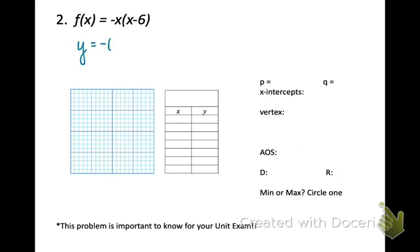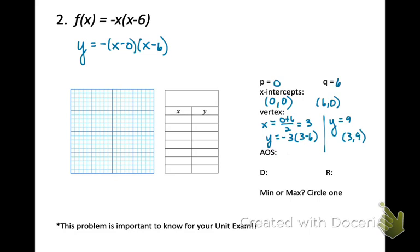All right, check your second one. Now this is one that you'll want to listen. So notice that the x was, first x was not in a parenthesis, but we could put it in a parenthesis, because you think, well, where's the p-value between p and q? Well, if there's nothing next to the x, we could technically put in a 0. So that means our p-value is 0, and our q-value is positive 6. So now we can see those intercepts at 0, 0. This problem is important because there is one like it on your unit exam for this graphing quadratics unit.